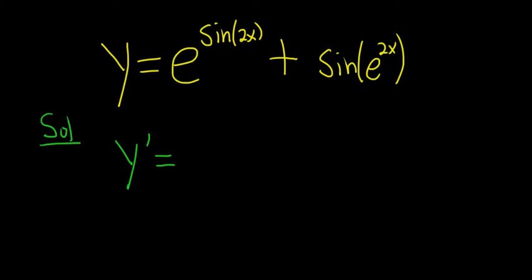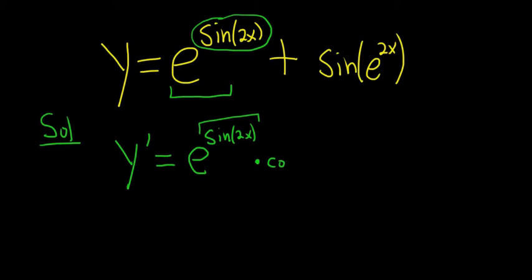The derivative of e to the x is just e to the x. So here it's e to the sine 2x, so it will be e to the sine 2x. And then you have to multiply by the derivative of the inside function. So the inside function here is sine 2x. Its derivative is cosine 2x. And then again, chain rule, multiply by the derivative of the inside function. The derivative of 2x is 2.